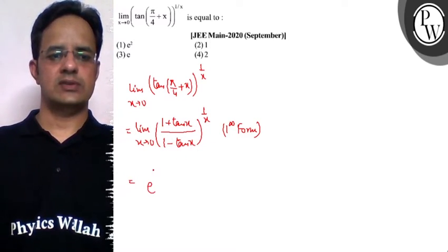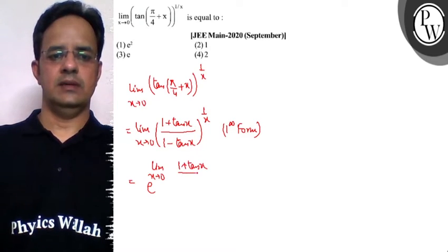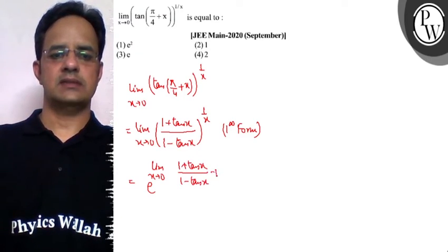So the answer will be e raised to the power limit x tending to 0, and it is (1 + tan x)/(1 - tan x) minus 1, multiplied with 1 upon x.